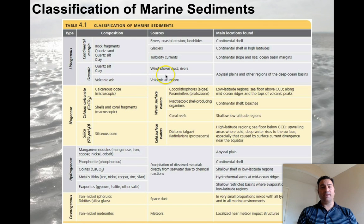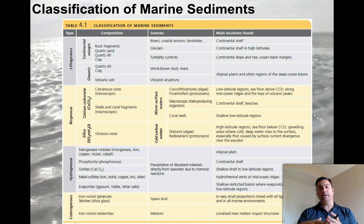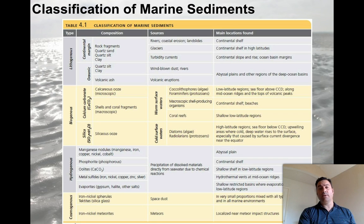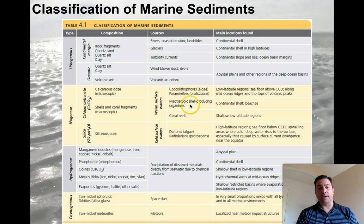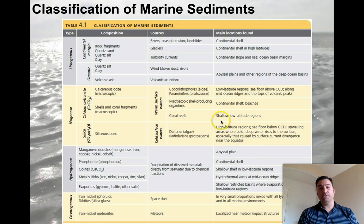The lithogenous and biogenous sediments can be used to figure out the type of depositional environment in which they formed. For example, biogenous sediments form on continental shelves and beaches, provided they have microscopic shell-producing organisms and it happens to be warm water. So we're looking for coral reefs — where would we expect to find them? Shallow, low-latitude regions, for example in the tropics.